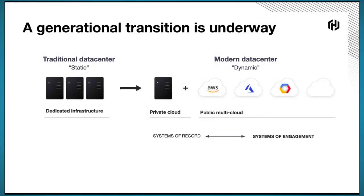The fundamental premise is that we see a generational transition underway, which is the basis for the cloud operating model. Historically, customers had largely dedicated servers in a private data center. That evolved into a private cloud notion through virtualization, and now into this dynamic modern data center across usually more than one public cloud. Early on in the cloud shift, there was this notion that we'd just move everything to AWS and life would be perfect. But the reality is organizations adopt AWS for some things and Azure for some things.